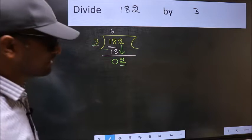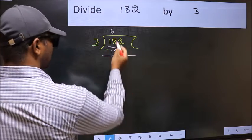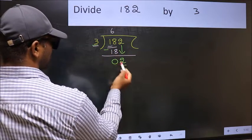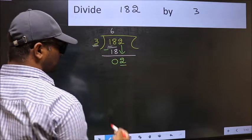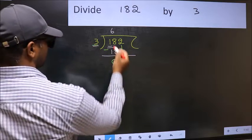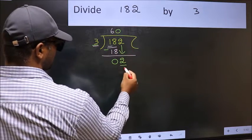Instead, what you should think of is, what number should we write here. If I take 1 here, I will get 3. But 3 is larger than 2. So, what we should do is, we should take 0. So, 3 into 0.